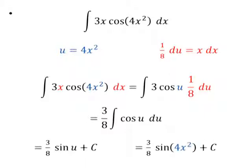Now I integrate as normal and get three-eighths sine u plus c. And I substitute back in my original u, the 4x squared. And this is my final answer.